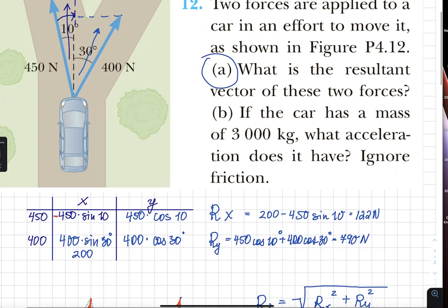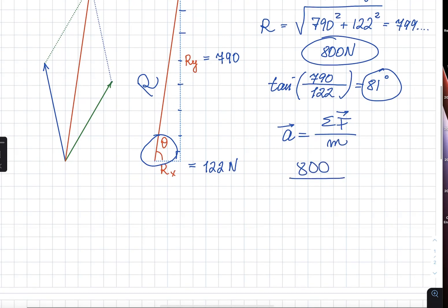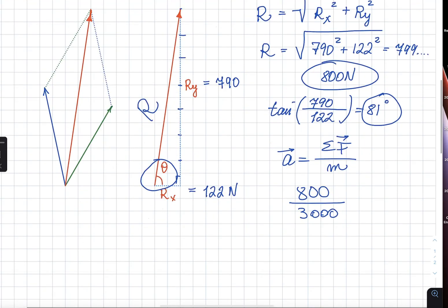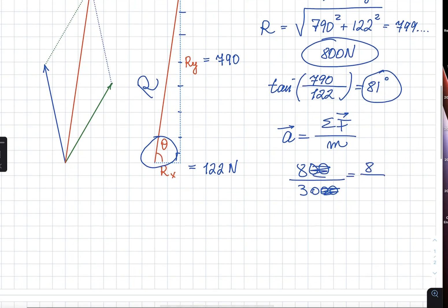Now, how do we figure out the acceleration? If you remember Newton's second law, the way Newton phrased it is acceleration is directly proportional to the net force and inversely proportional to mass. So, our net force, we figured out, was 800 newtons. And they're telling us that the car's mass is 3,000 kilograms. So, it's like 8 over 30, a little over 0.2, 0.27. And it's going to be meters per second squared.